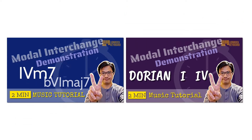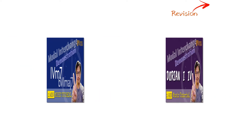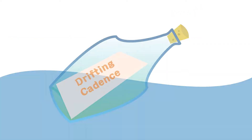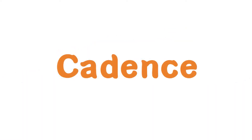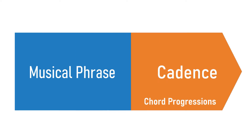In my previous videos, I showed you some concepts and ideas of modal interchange. If you want, you can take a look at those videos through the links here. Before we talk about the drifting cadence, I'd like to briefly show you what cadence is. Simply put, cadence is a set of chord progressions that are used for ending a musical phrase.